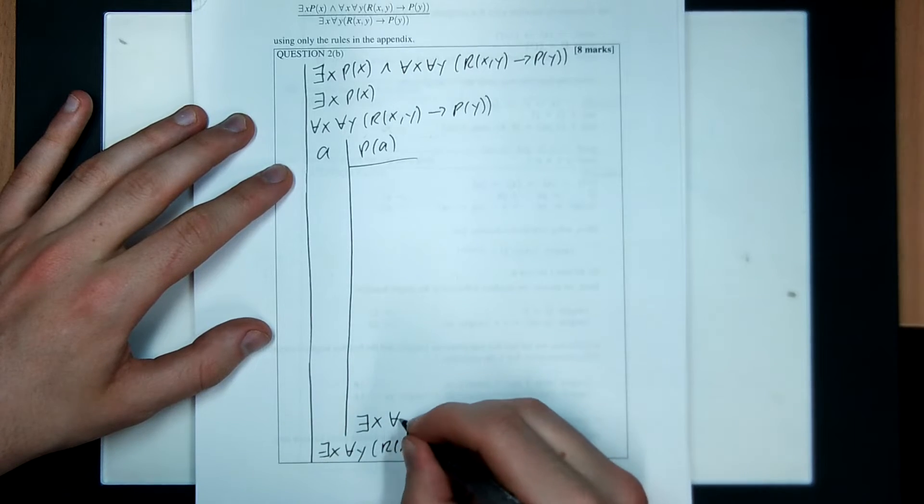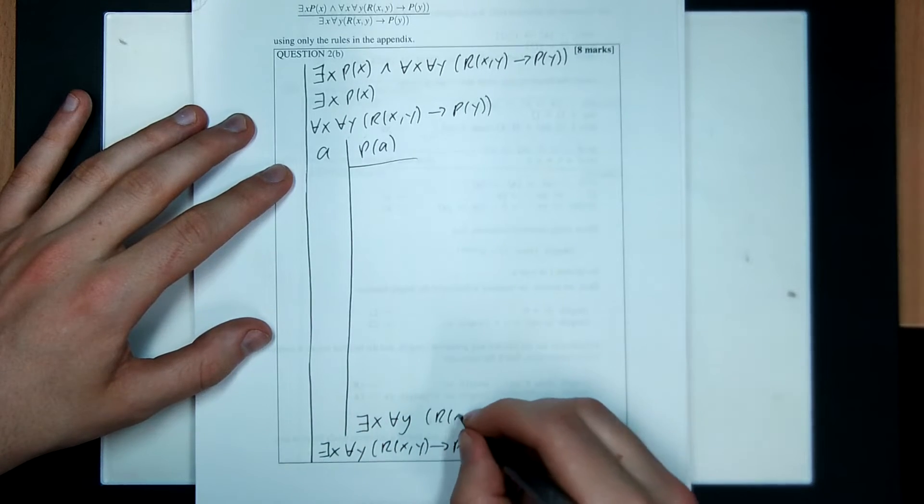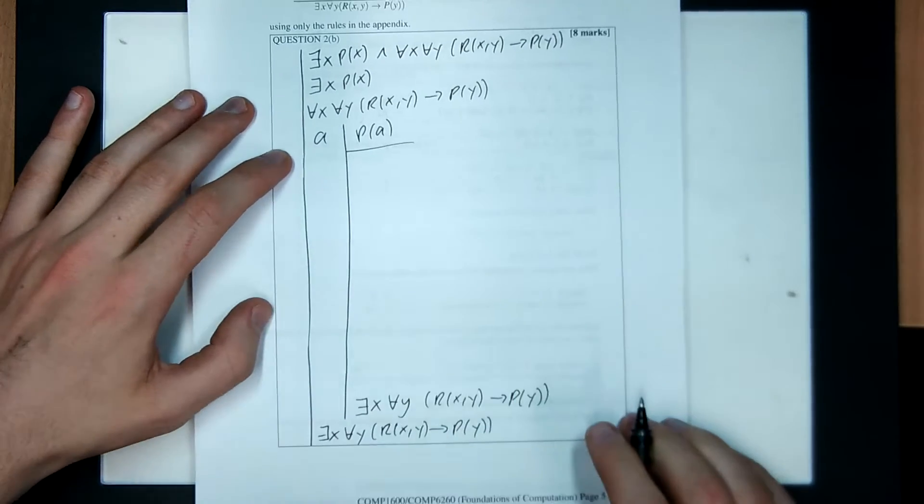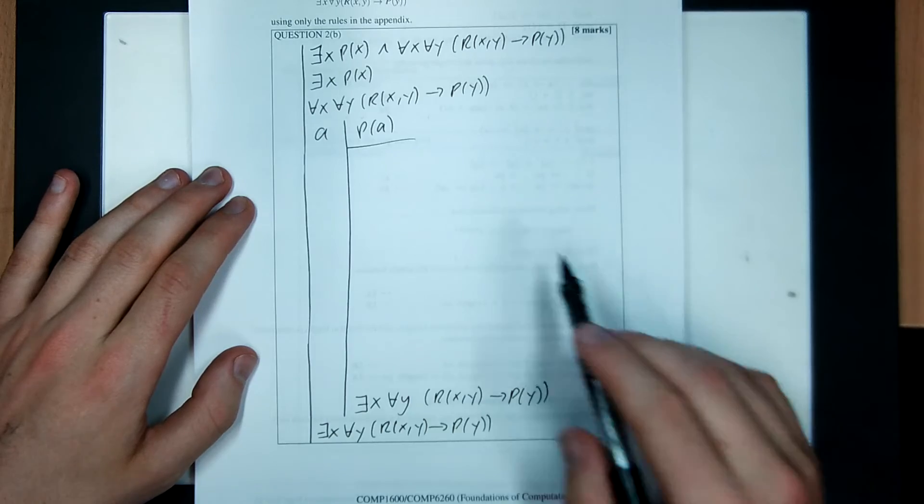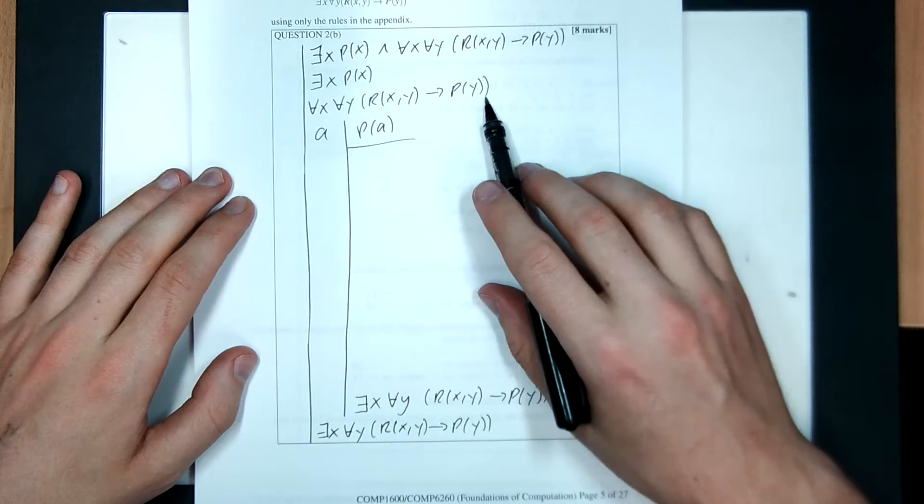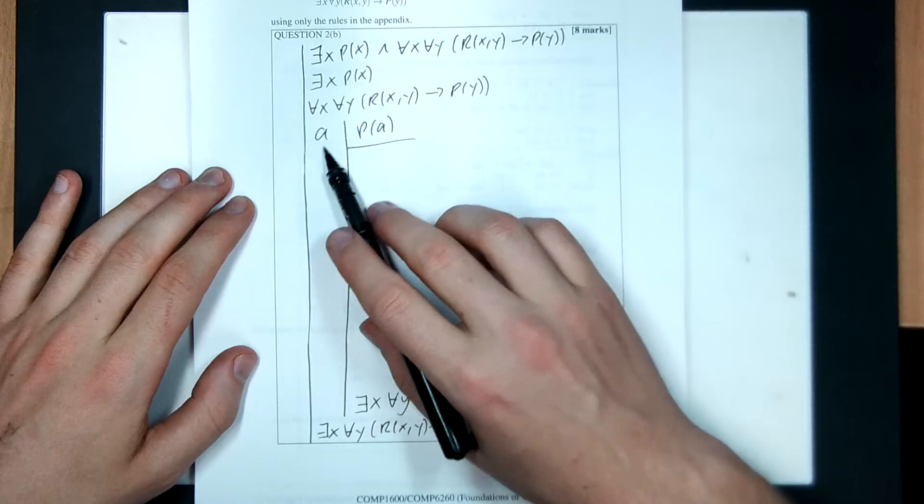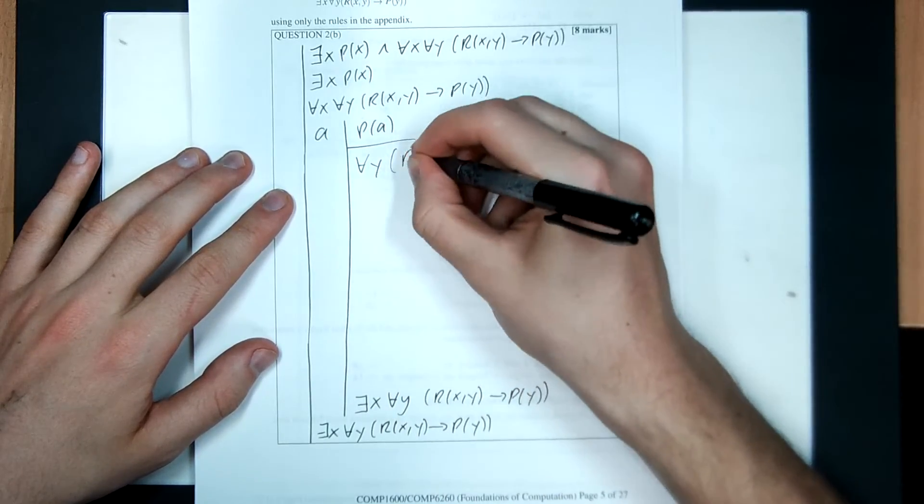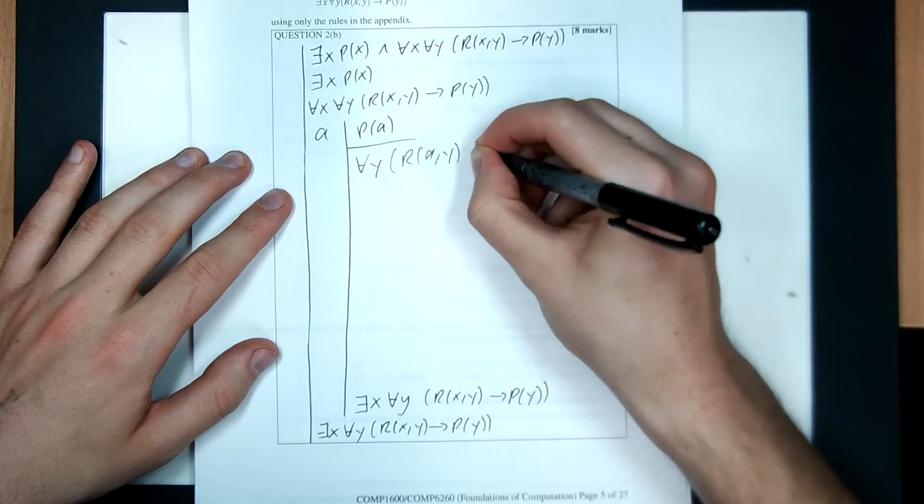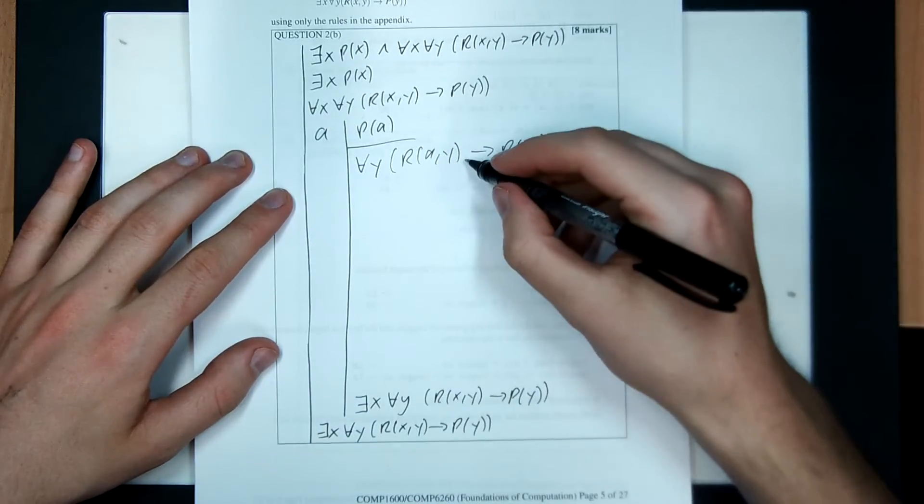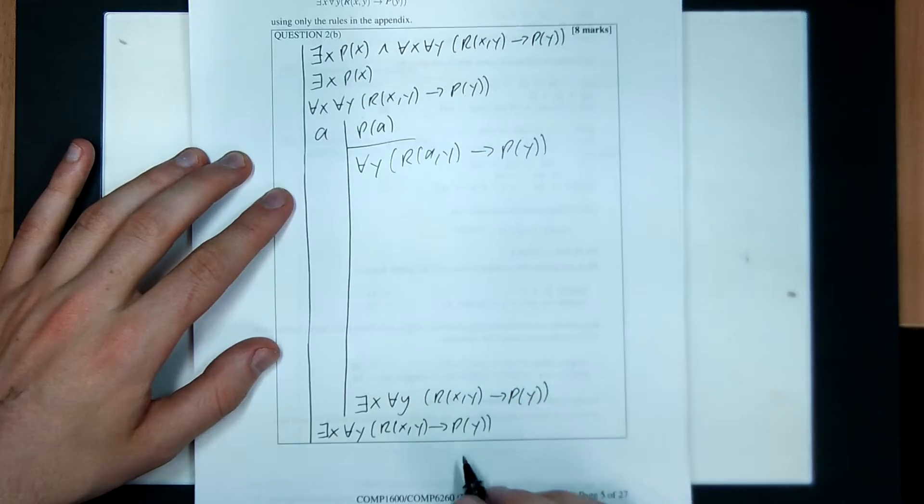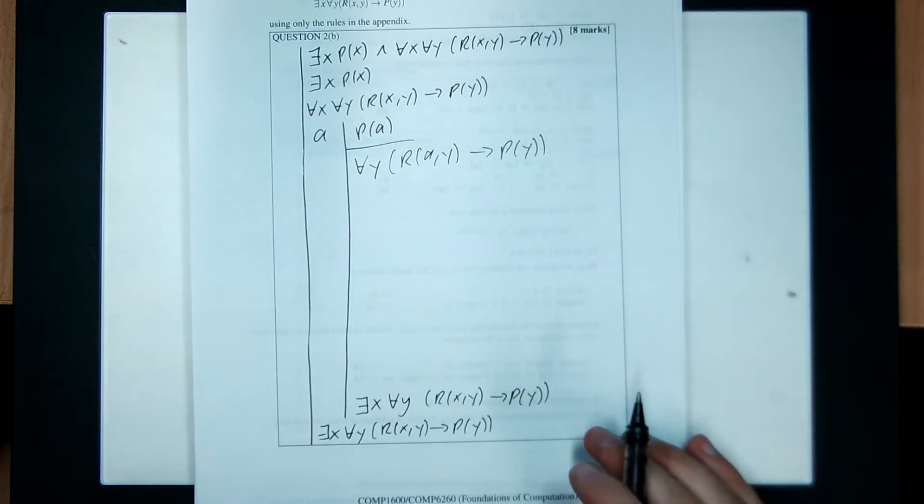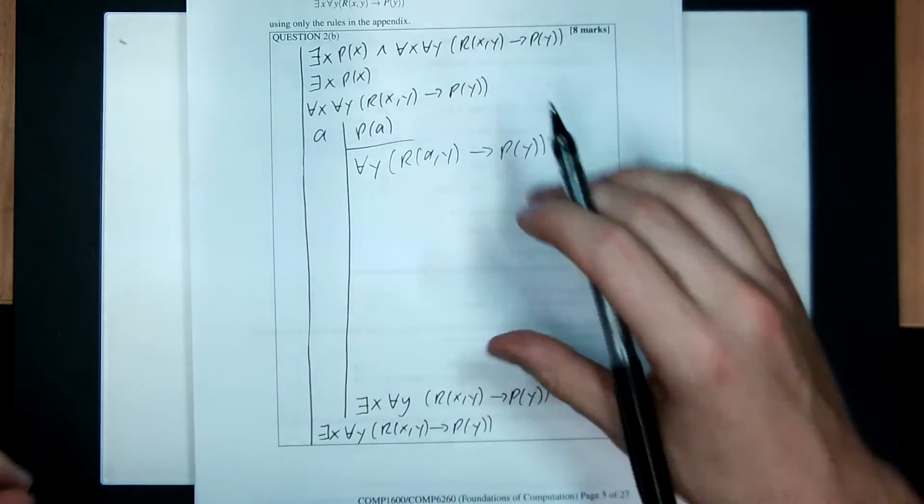Okay. What now? Well, I know for all X it works. And I know there exists something in my universe, namely A, so I can for all eliminate. So, for all Y, R(A,Y) implies P(Y). And then I can existence introduce on the A and get what I wanted. I left a big gaping gap here, which makes my proof look a bit gross. But, you know, oh well, better to have a bigger gap than a smaller gap. So, there we go.